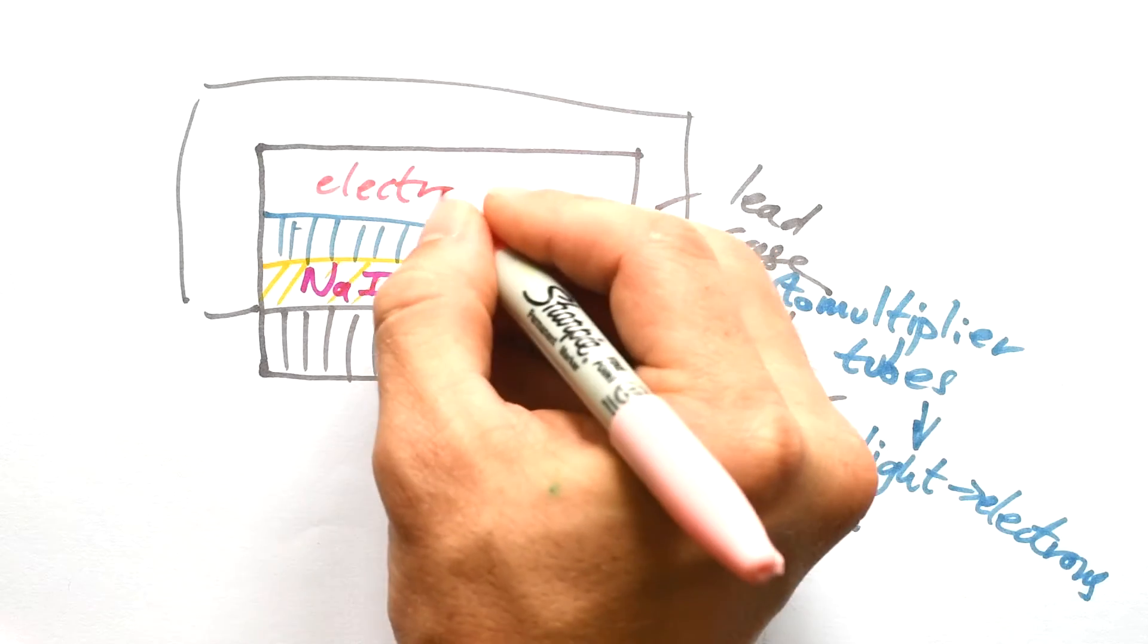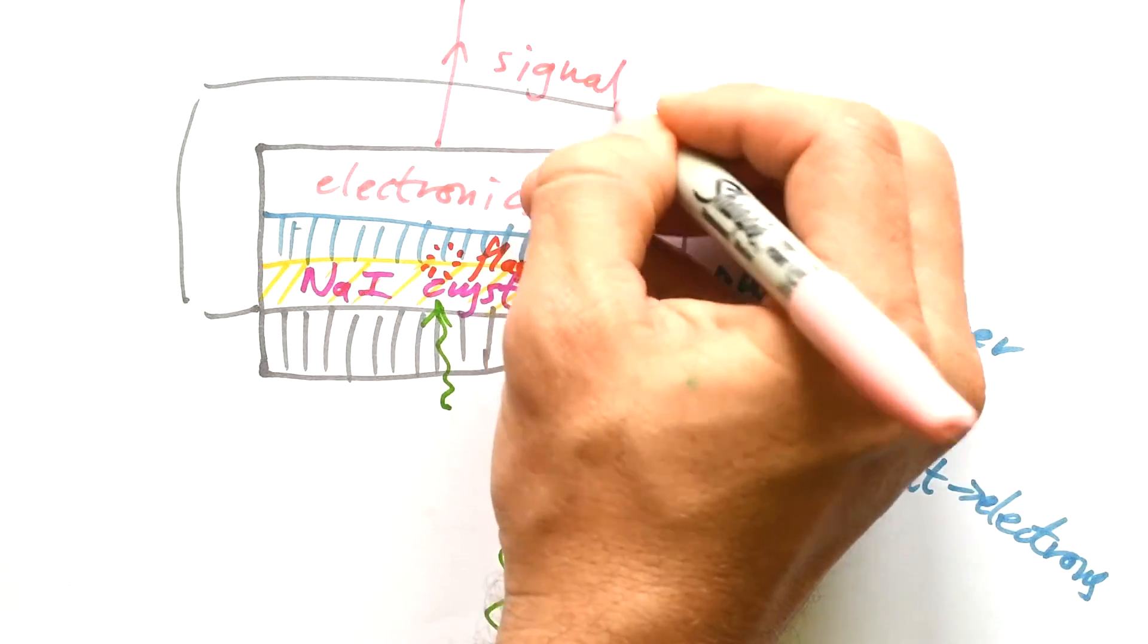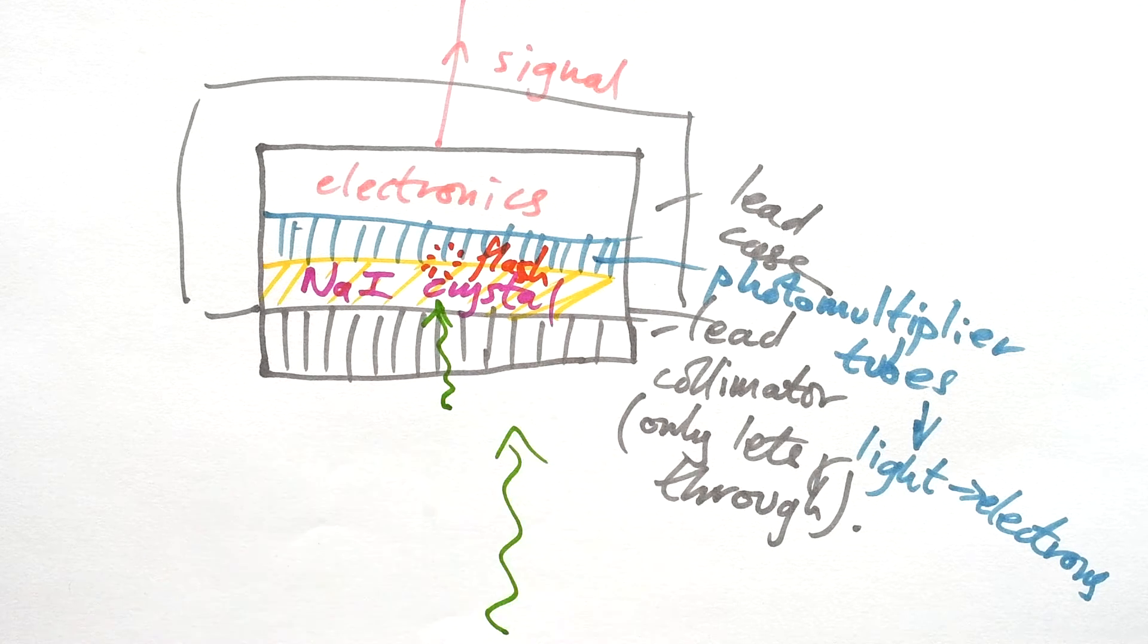And then we have a lot of fancy electronics in here. And then that takes the signal out to the computer to then be processed. Building up an image using gamma photons going into the different bits of the camera.